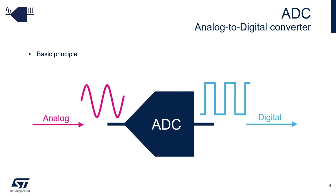So let's start with the device presentation. Here is the basic principle of an ADC: the purpose is to convert an analog signal from the real world into a digital signal, which can then be processed by software.